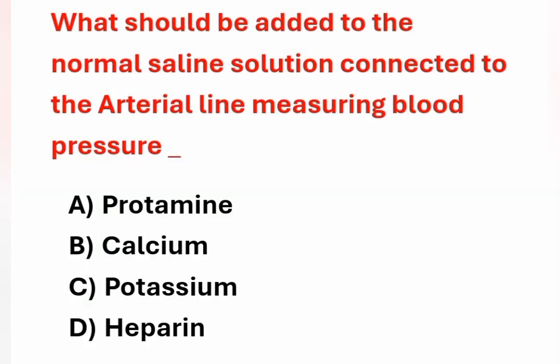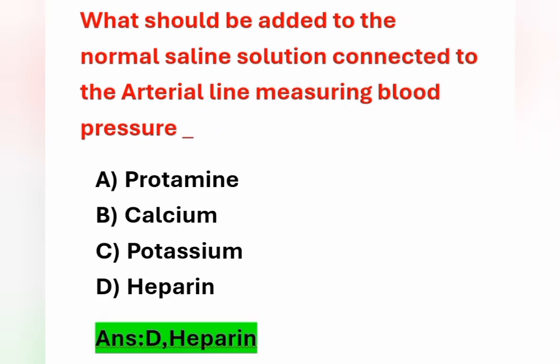Next question: what should be added to the normal saline solution connected to the arterial line when measuring blood pressure? Options: Option A – protamine. Option B – calcium. Option C – potassium. Option D – heparin. The answer is heparin. Heparin is an anticoagulant and should be added to the normal saline solution.